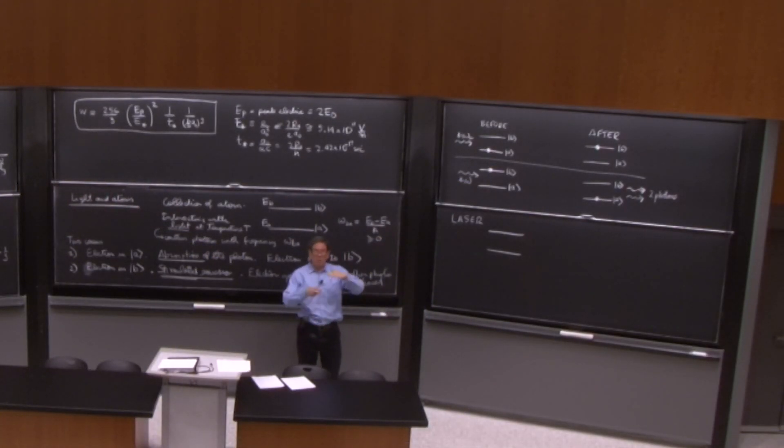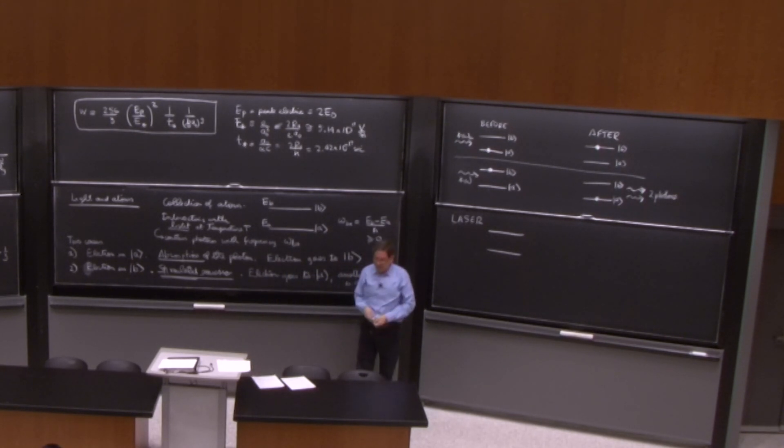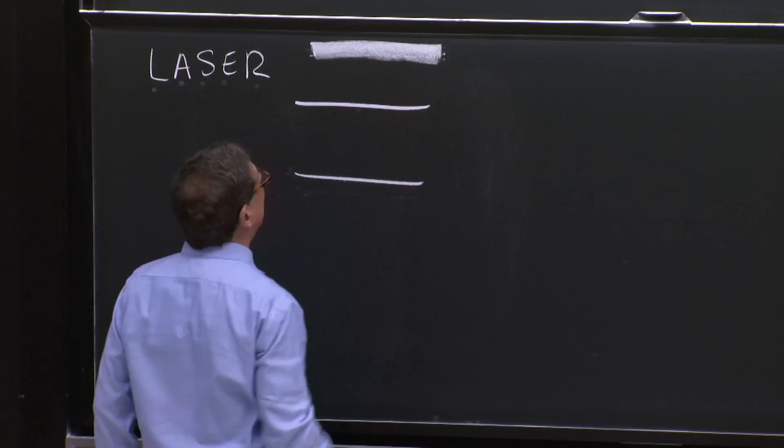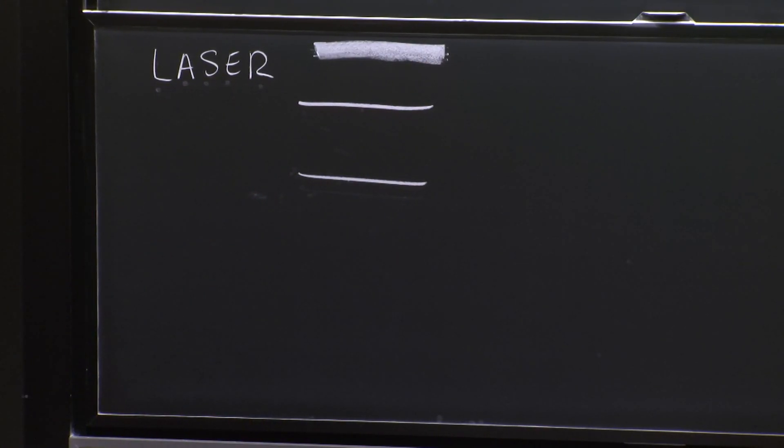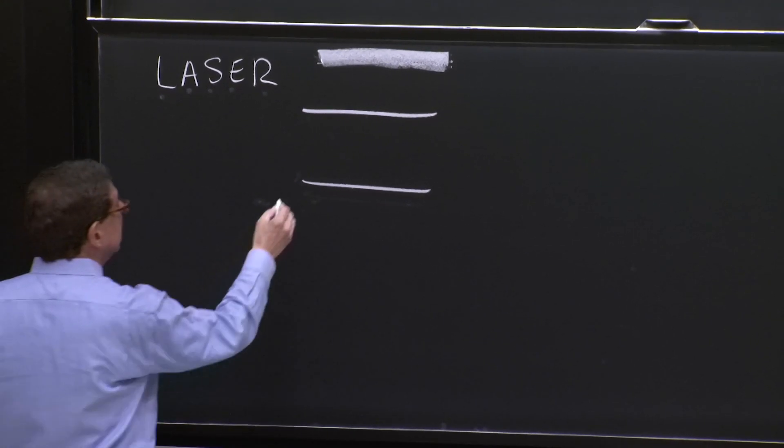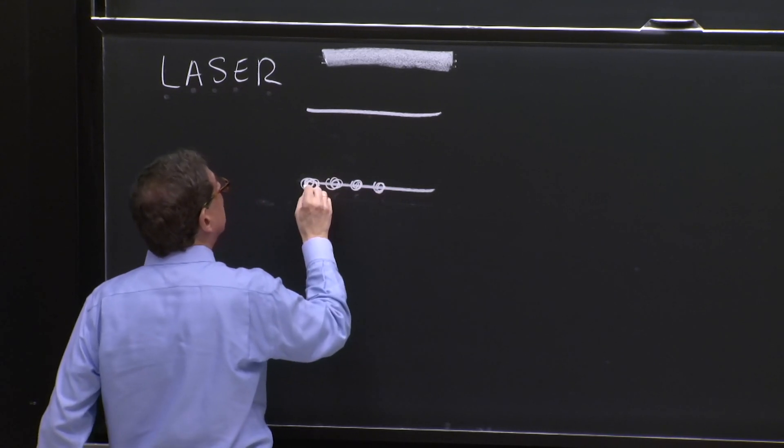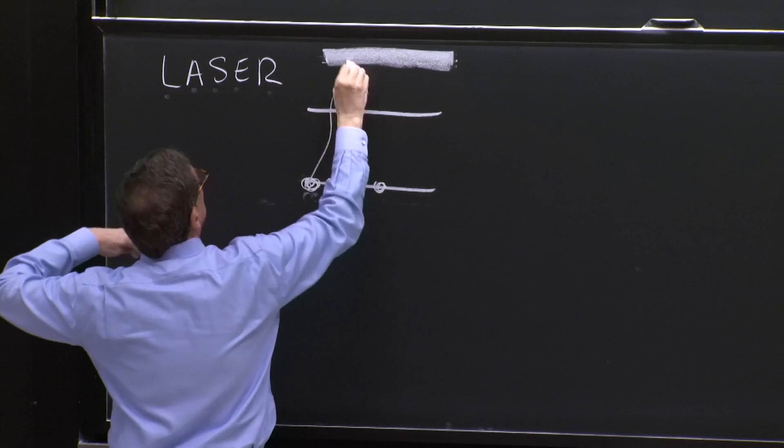That's the term called population inversion. You need to get the electrons that are in the bottom to go up to the next level and put them there. That's a technical difficulty, of course. And it's usually solved by optical pumping. We're not going to be doing engineering here today. But there's a third level here in a typical laser. And you can send the electrons that are sitting originally here with optical, with light again, into the third level.